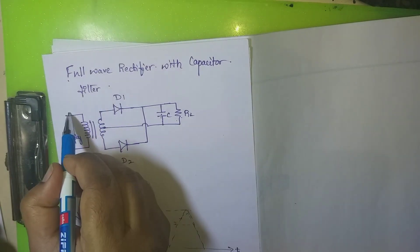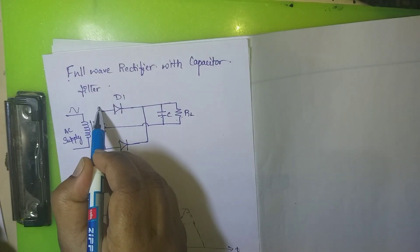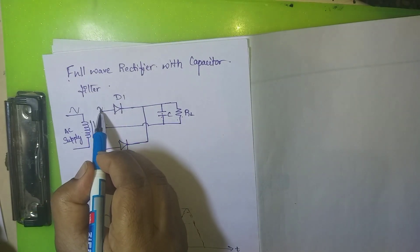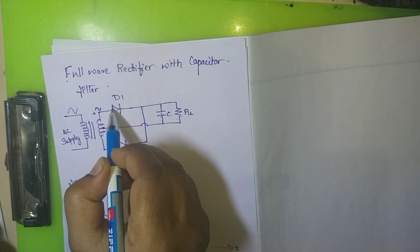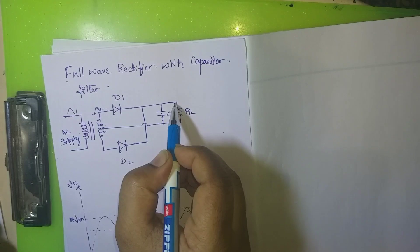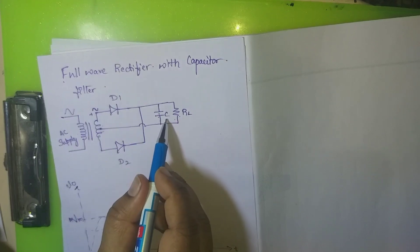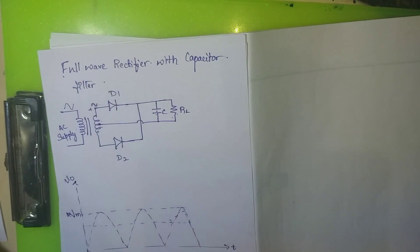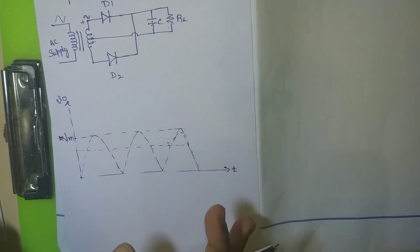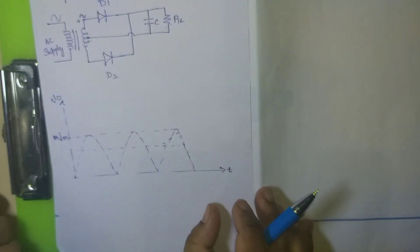When AC supply is given to the transformer, a sinusoidal AC signal appears at the secondary. During the positive half cycle, point E becomes positive, D1 turns on, and current flows through RL. During the negative half cycle, D2 conducts and current again flows through RL. This is the standard full wave rectification we studied earlier. Now with a capacitor present, we examine charging and discharging.